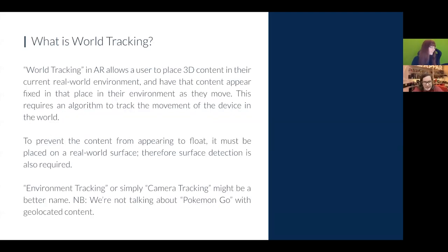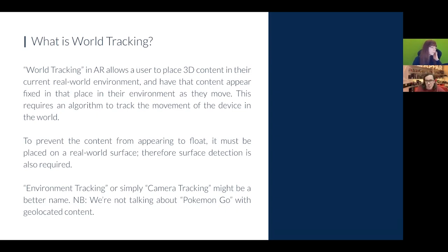WorldTracking AR allows users to place 3D content in their environment and have it appear like it's locked in position as they move around, so they can explore naturally. To prevent content from looking like it's floating, it needs to be positioned and aligned with a surface in the world — so surface detection is another important part of a WorldTracking implementation. It could more accurately be called environment tracking or camera tracking. We're not talking about WorldTracking as in geolocated AR experiences like Pokemon Go — here we're talking about mapping and placing content in the user's local current environment.